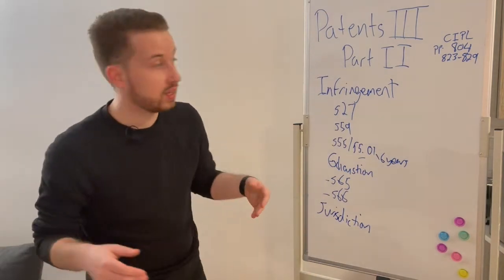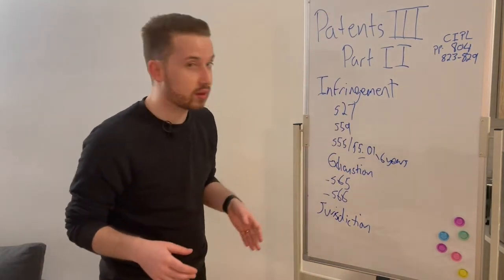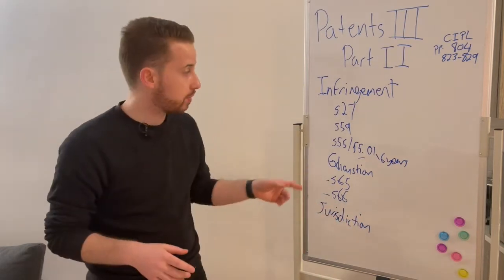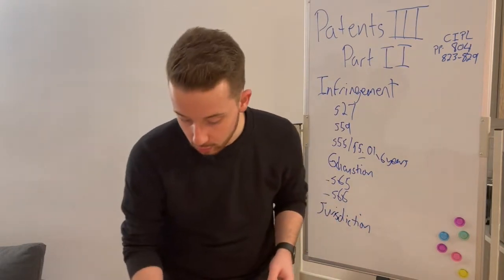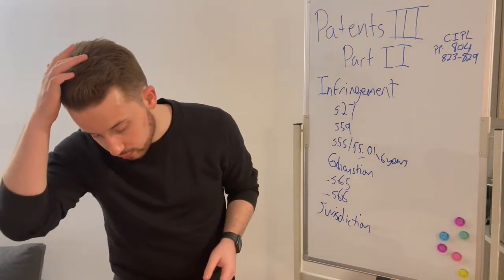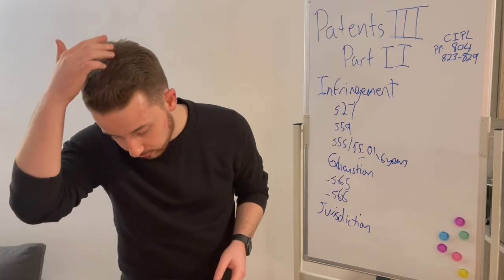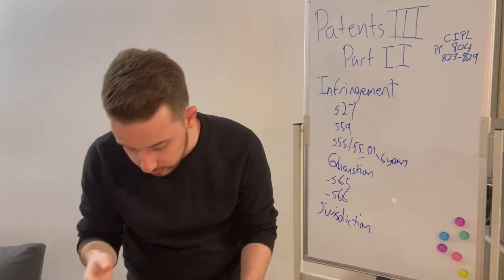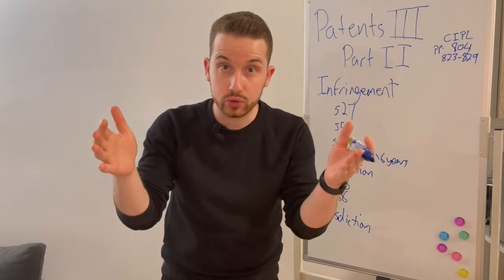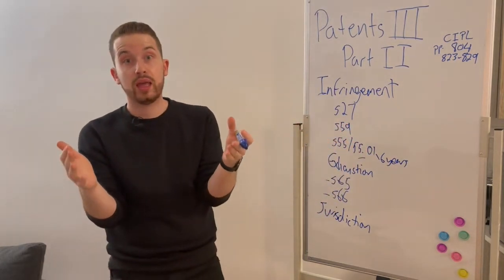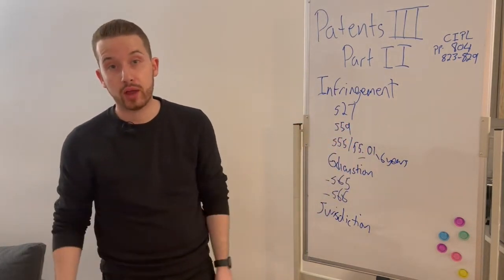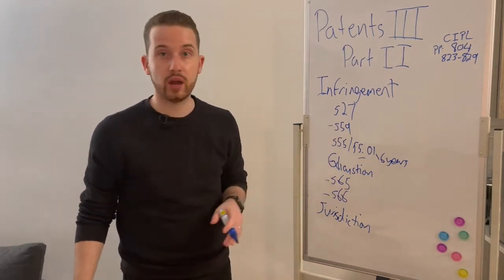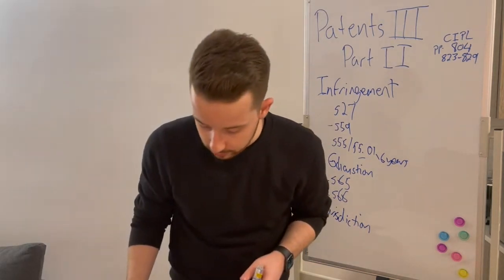The second section covers defenses to infringement. The first defense — which conceptually isn't really a defense — is to say that you don't have a valid patent in the first place. That's provided for in section 59, which is what section 59 says.